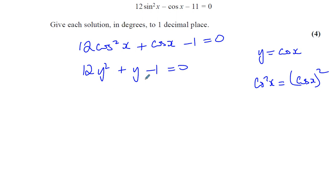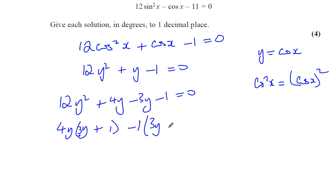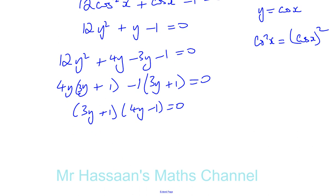To factorize 12y² + y − 1, we split the middle term. We need two numbers that multiply to give −12 and have a difference of 1 — that's 4 and 3. So: 12y² + 4y − 3y − 1 = 0, giving (4y − 1)(3y + 1) = 0. The solutions are y = 1/4 and y = −1/3.